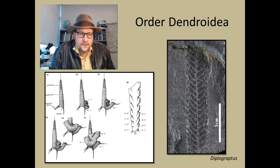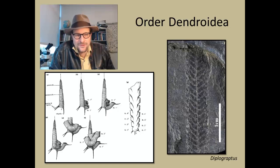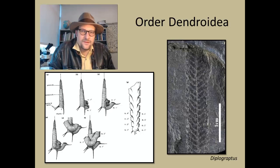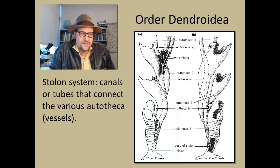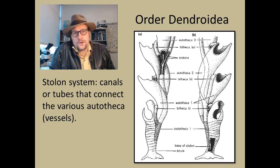The order Dendroidea tends to include forms that seem more attached. It's hypothesized these may have been more sessile, although some are probably floaters — so they might have grown somewhat like a plant. They have apertures that grow out, composed of organic matter forming their skeletons. A good example is Diplographis. The order Dendroidea have stolial systems — canals or tubes connecting the various vessels. The stola are often quite pronounced, forming much of the skeleton, made out of organic carbon, connecting each aperture that housed some sort of creature, some zooid.